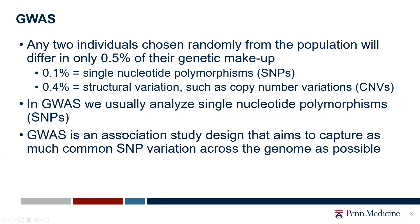GWAS aims to capture as much common SNP variation across the genome as possible, even though between any two individuals there's only about 0.1% of alleles that differ. The remaining 0.4% of variation is structural variation — copy number variants, where people have chunks of DNA that have been either deleted or duplicated. Copy number variants tend to be rarer and have larger effect sizes, so we don't look at those in GWAS; they have to be analyzed in a different way.